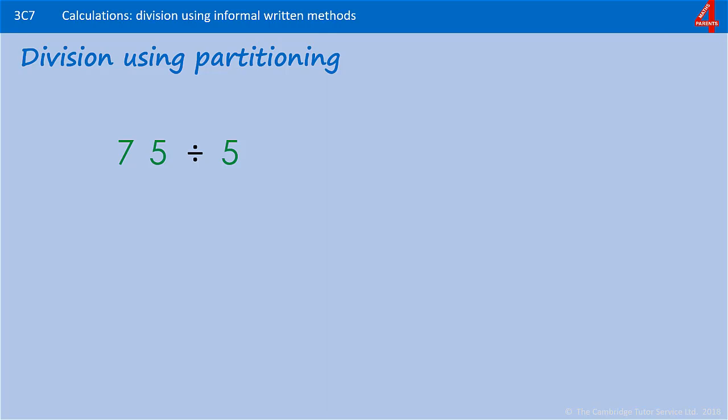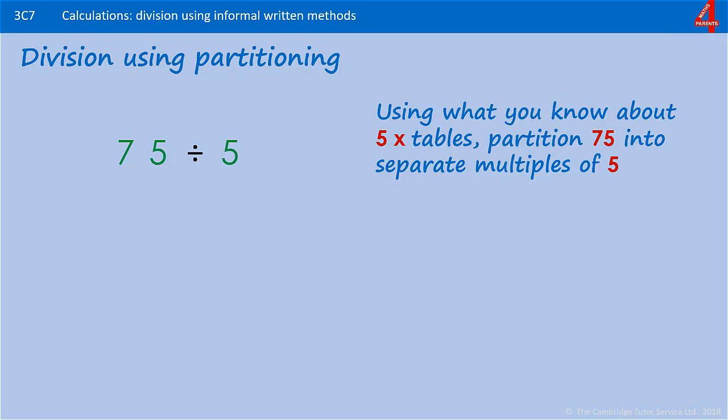75 divided by 5. You might know up to 12 times 5, but you might not know how many fives in 75. So we're going to use what we do know about the 5 times table to take a big chunk of something that's a multiple of 5 to start with.